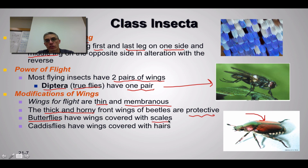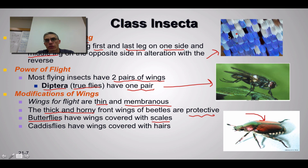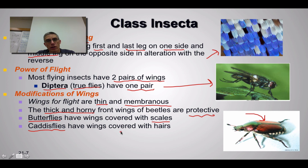Butterflies have wings covered with scales — if you've ever captured a moth or butterfly, that powdery stuff on your fingers is the scales from the wings. So for butterflies and moths, you see a scaly type structure on the wings. Another example is the caddisfly, found in wet aquatic environments, where the wings might be covered with very small hairs.